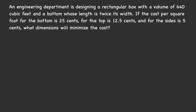An engineering department is designing a rectangular box with a volume of 640 cubic feet and a bottom whose length is twice its width. The cost per square foot for the bottom is 25 cents, for the top is 12.5 cents, and for the sides it's 5 cents. What dimensions will minimize the cost?